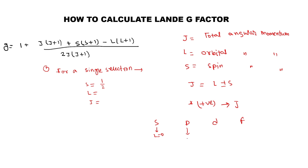For p, l is equal to 1. For d, l is equal to 2, and for f, l is equal to 3. Therefore, for the s electron, l is equal to 0. And j is equal to l plus or minus s — we take only the positive value, which is 0 plus one-half, giving j equals one-half.